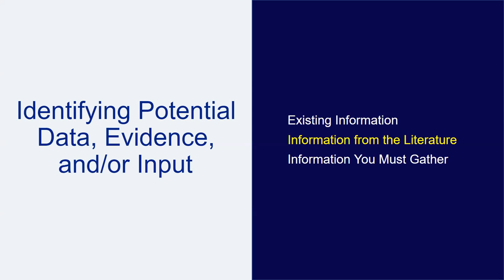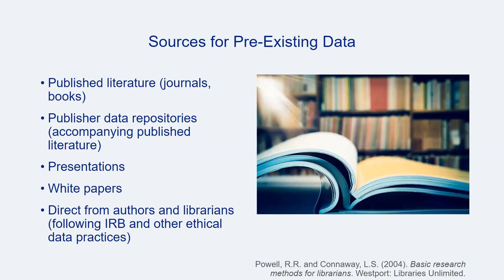While library assessment practitioners might often access existing information sources from within their libraries and institutions, they might also explore the literature to connect with information already gathered and shared by similar libraries or professional colleagues seeking to respond to similar needs. Existing data sources relevant to a particular assessment project can come from published literature including journals and books, repositories where authors have placed their research data, professional presentations, and white papers. Once key authors in a particular area are identified, they too might be willing to share their data, provided that it's ethical and allowable in accordance with good data practices.